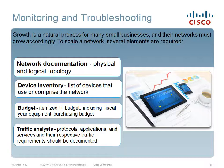Monitoring and troubleshooting: growth is a natural process for many small businesses, and their network must grow accordingly. To scale a network, several elements are required: network documentation including physical and logical topology; a device inventory listing all devices that use and comprise the network; a budget with an itemized IT budget including fiscal year equipment purchase; and traffic analysis — protocols, applications, and services with strict traffic requirements should be documented. We need to know all this so we can grow the network correctly to our needs.